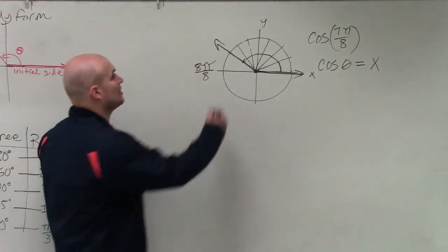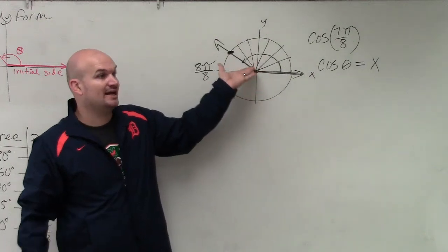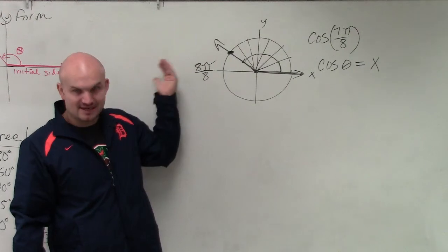And basically, they're asking, let's just think about this as a point on the unit circle. Would that point be a negative for x or a positive? Negative. Since it's in the second quadrant, we know x is negative, right?